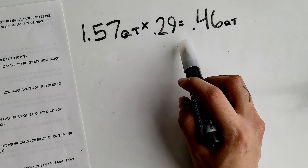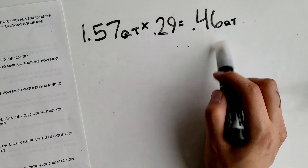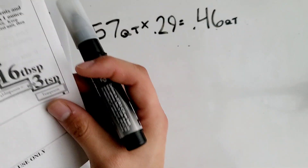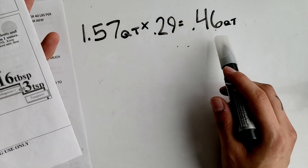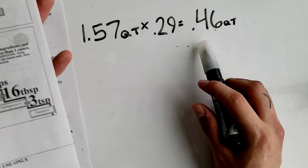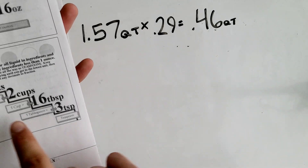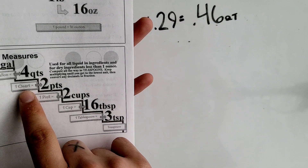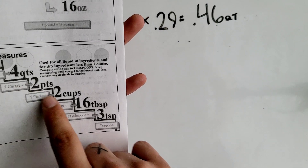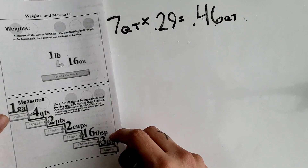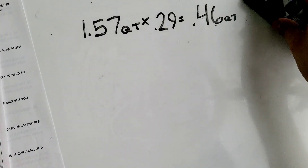0.46 quarts is not your final answer because we can't leave it as a decimal. We have to convert it to its lowest possible unit. Right now we're at quarts and we need to go down to teaspoons if possible, starting with 0.46 quarts.